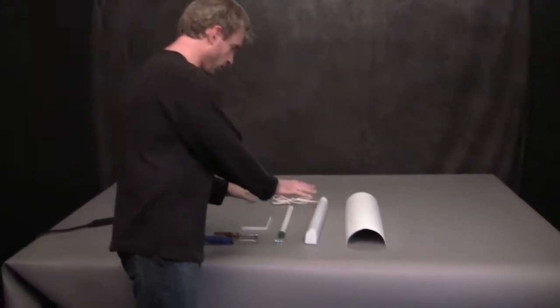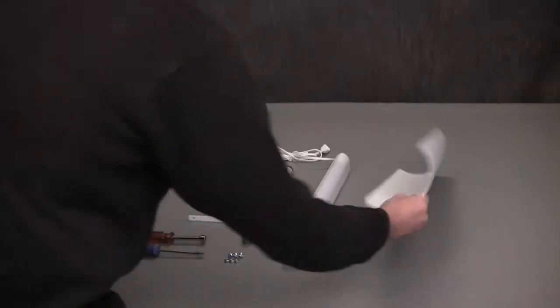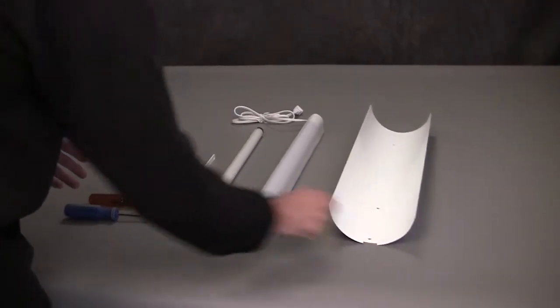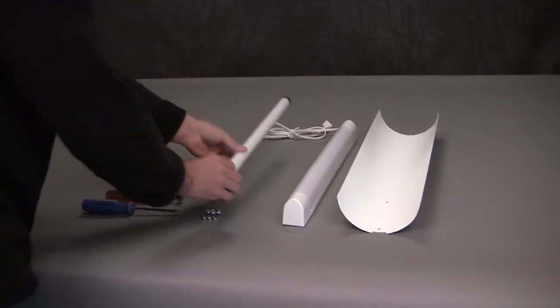We're going to show you all the elements that come in the AL1 box when you order it. This is the powder coated aluminum housing. This is the fluorescent lamp fixture. It comes without a bulb in it. The bulb comes separately.